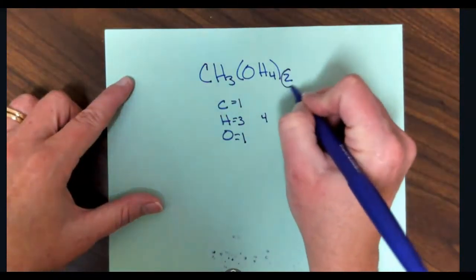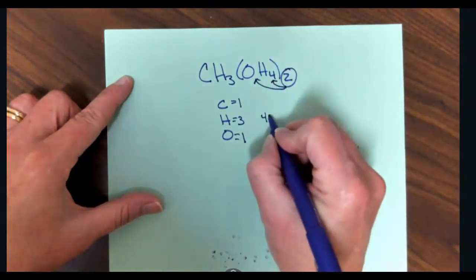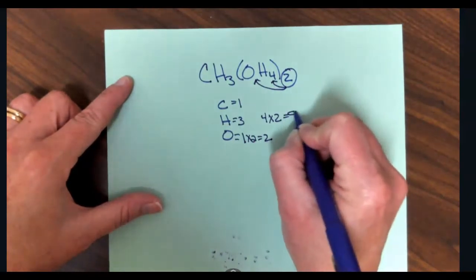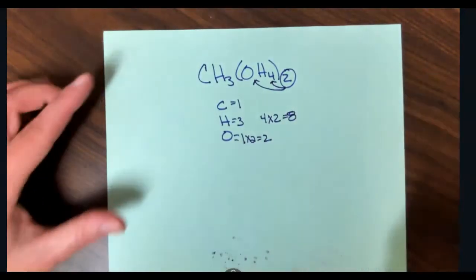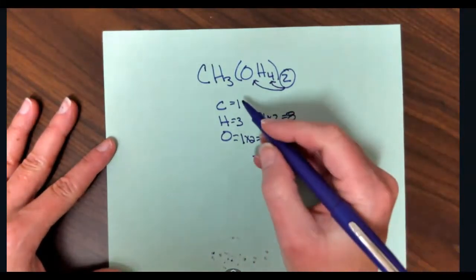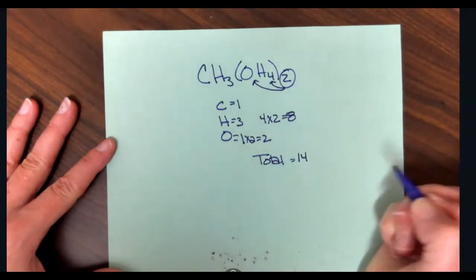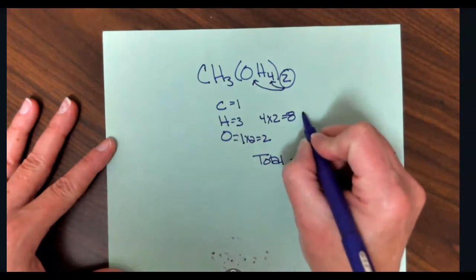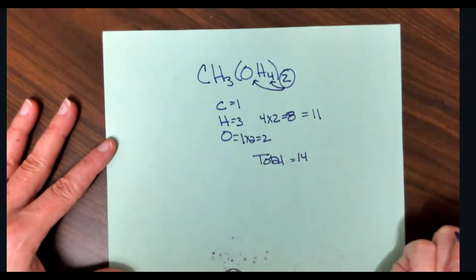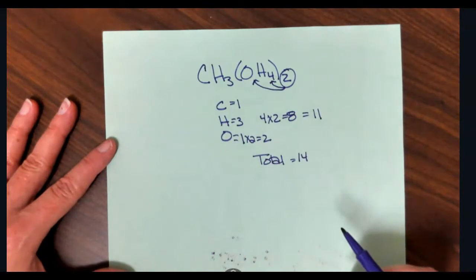But, because I have a subscript outside the parentheses, I have to distribute it to everything inside. So I have to multiply that times 2, multiply that times 2. So if I'm looking for the total number of atoms, I have to add them, 1, plus 3, plus 8, plus 2. If I want the total number of atoms, I have to add those, that's 14. So just remember, if there's parentheses, you distribute what's outside to what's inside.